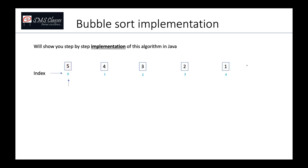Now let's implement this as a Java program. We start by comparing the first two elements: if a[0] > a[1]. Rather than memorizing a full for-loop structure upfront, we implement step by step as the algorithm dictates — understanding the logic first, then building the program incrementally.